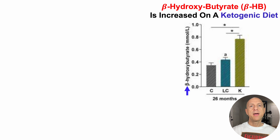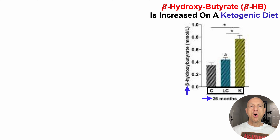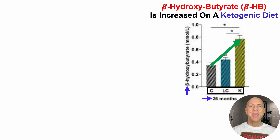Apologies that the image is a bit blurry — this is a screenshot from the paper, and I'll link to it in the video's description. On the x-axis, we can see that these mice were relatively old, 26 months. We've got three groups: C for the control diet, LC for low-carb — actually high-fat, just not as high-fat as the ketogenic group K. For the ketogenic diet-fed mice, they had approximately two-fold higher circulating levels of beta-hydroxybutyrate compared to the control diet.